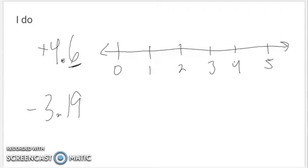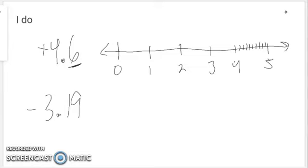So what I want to do is put four and six tenths on here. I would partition between four and five into tenths — one, two, three, four, five, six, seven, eight, nine, ten tenths is the next number. So what I really do is take four, then partition that next part into tenths and go six tenths: one, two, three, four, five, six — that one right there. It's more than four, it's less than five, closer to five. That would be for positive four and six tenths.